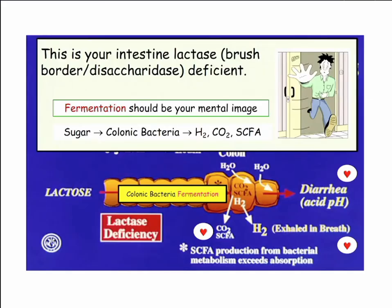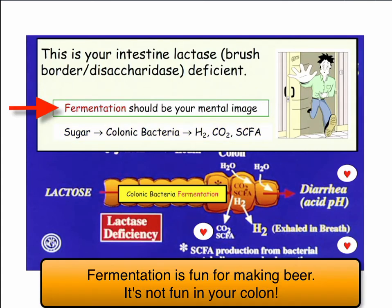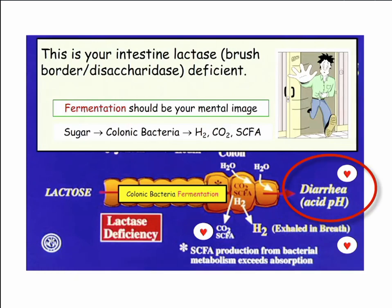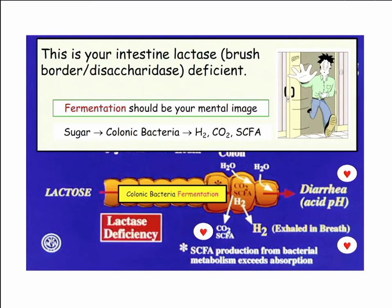Lactose deficiency — lacking lactase — means the sugar that's not supposed to come into the colon gets there. It's supposed to be all absorbed, but now you have lactose coming into the colon and the bacteria ferment it. Fermentation is what happens when the sugar reaches the colonic bacteria. When you ferment, you create acids, hydrogen ions, so you get diarrhea for sure, and it's an acid pH because you're making short-chain fatty acids and hydrogen gas, among other gases. Fermenting sugar — not so good.